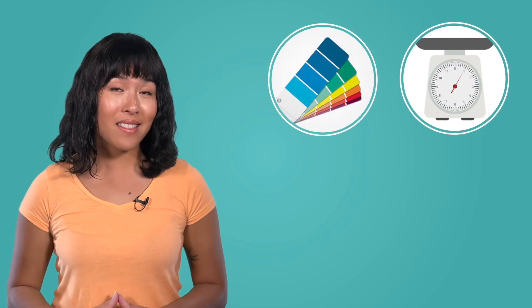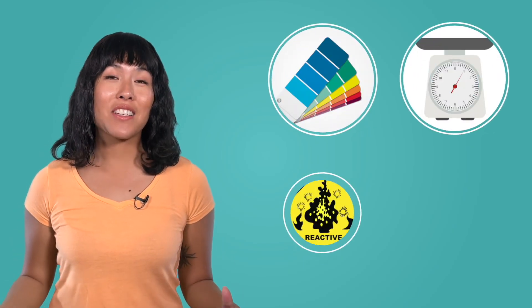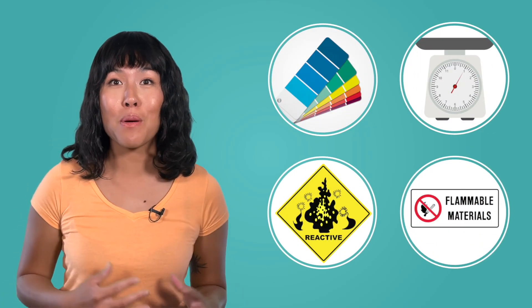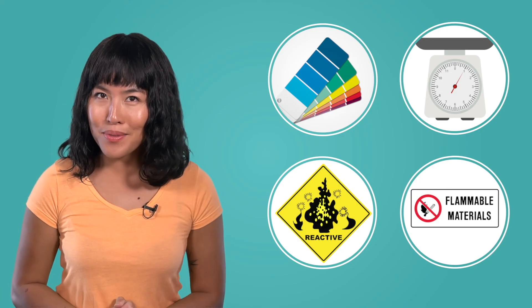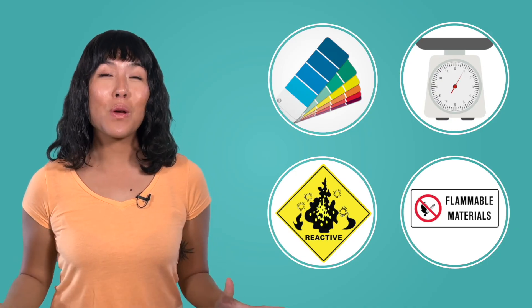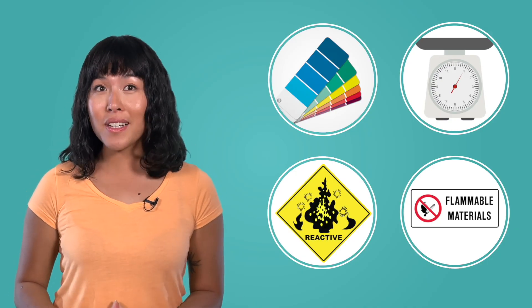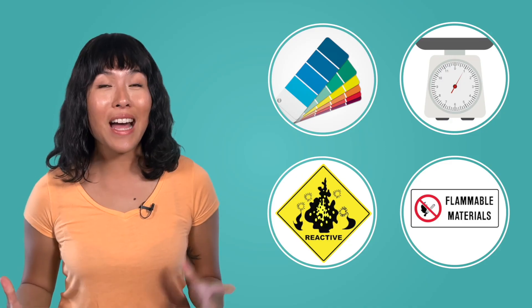As we went through the lesson today, we learned about physical properties such as color and mass, and chemical properties such as reactivity and flammability. We also discussed how these properties can be used to identify a substance. In our next lesson, we will learn about changes to these properties as we discuss physical and chemical changes.